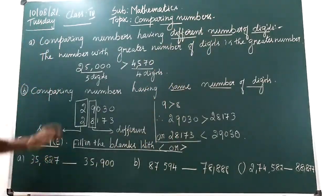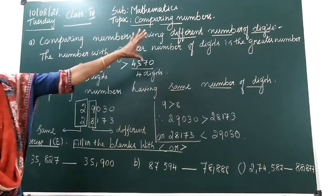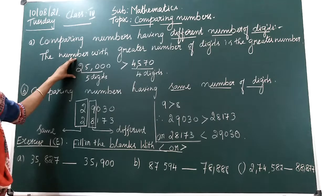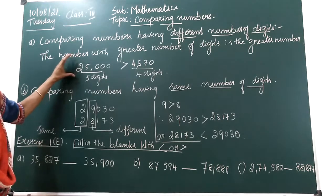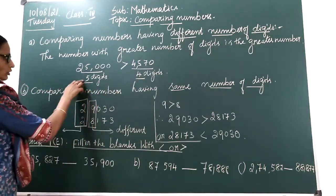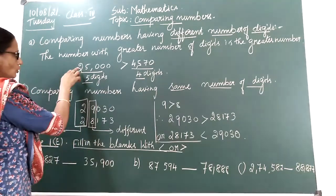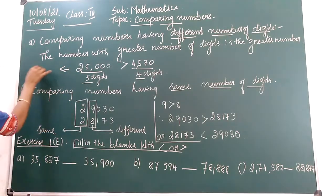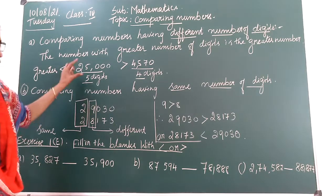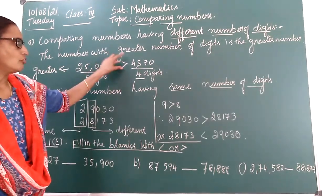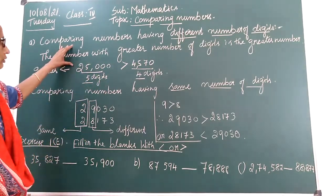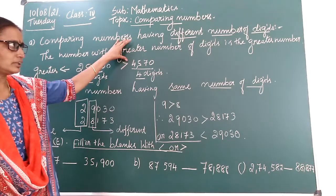The number with greater number of digits is the greater number. Here, see — the greater number of digits is 25,000. So, 25,000 is greater than 4,570. The first rule is: the number with greater number of digits is the greater number.